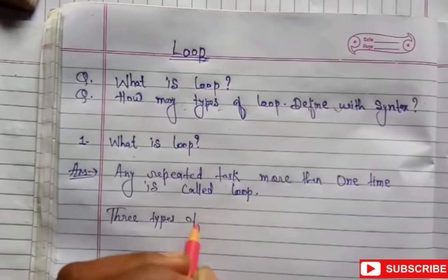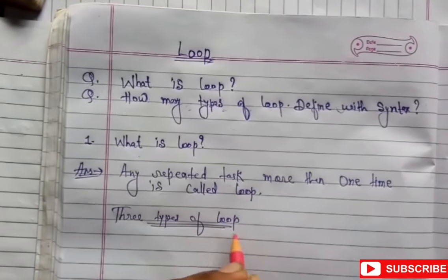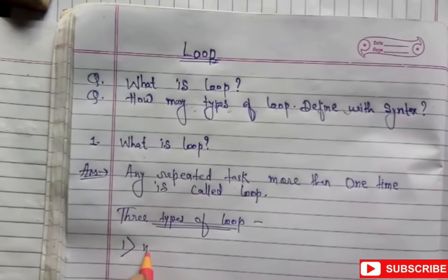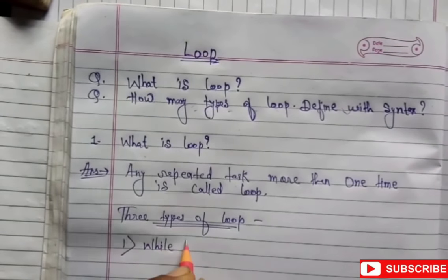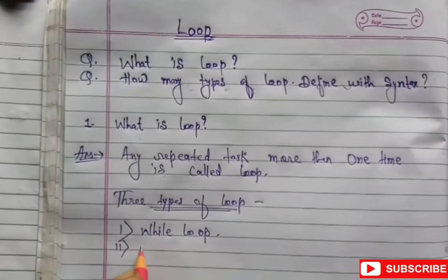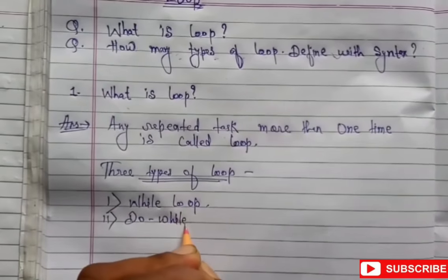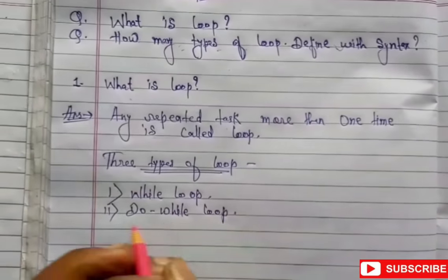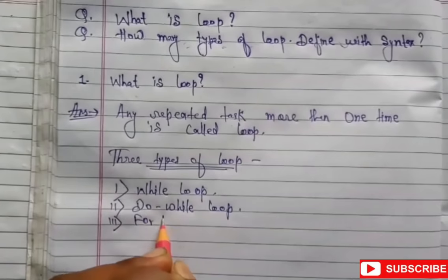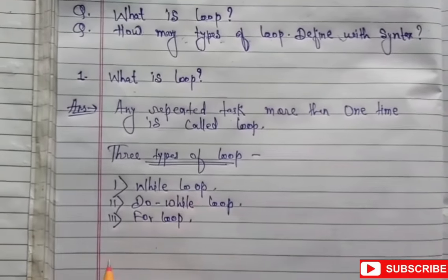So here we discuss how many types of loop there are. Basically three types of loop: first, while loop; second, do-while loop; and third, for loop. These are the three basic loops in C and C++ language.